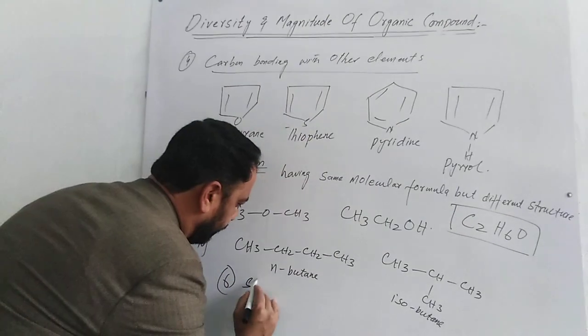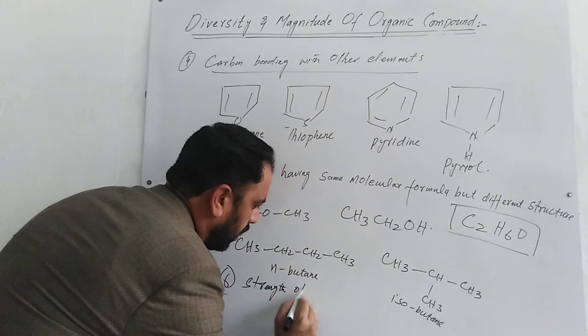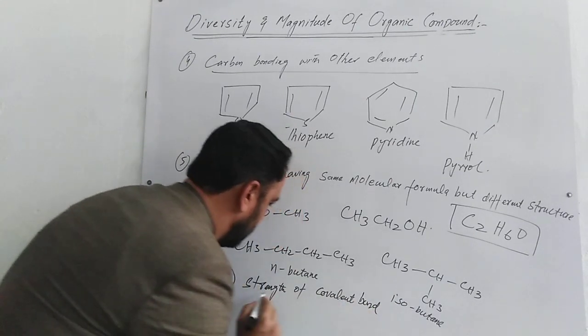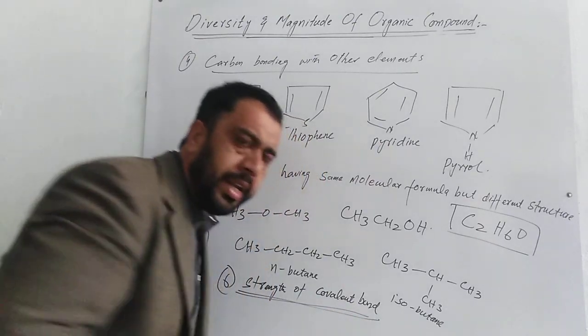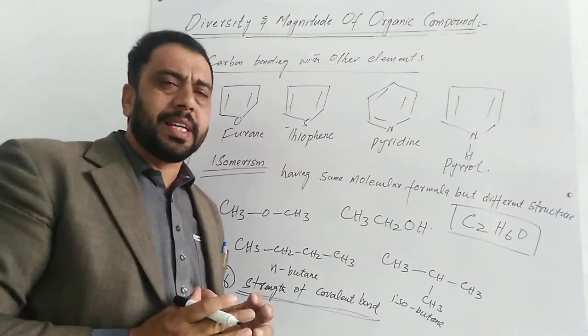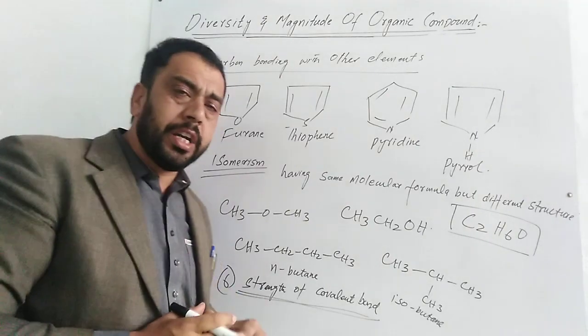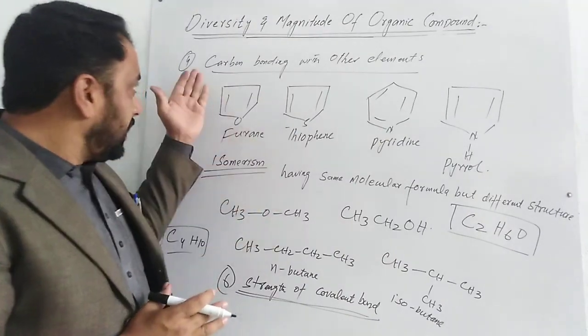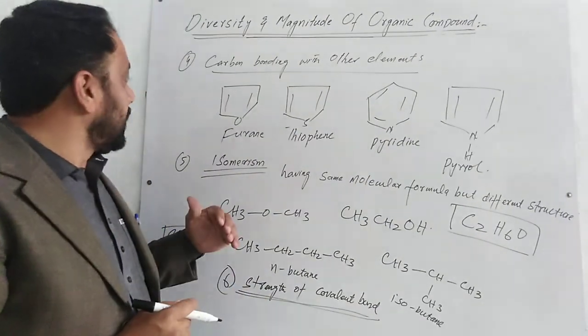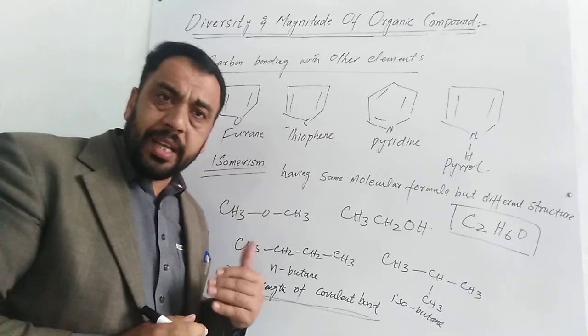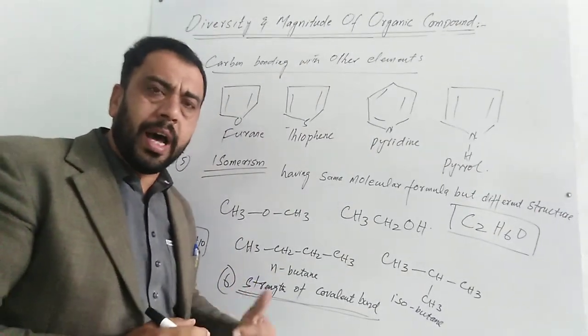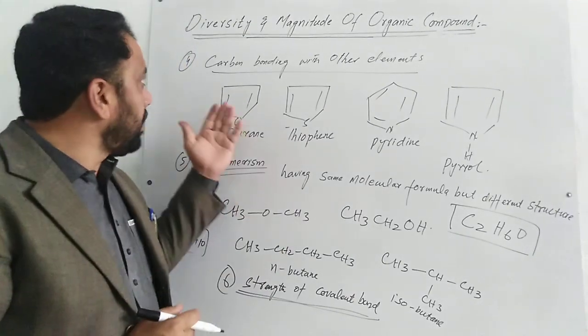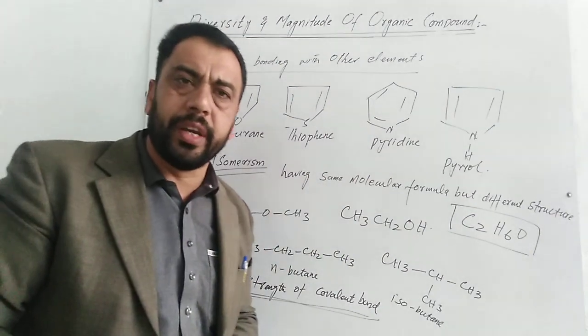Another property is the strength of covalent bonds of carbon atoms. Carbon atoms are small in size and their bond energy is very high. This is also a reason. So these are the different reasons why organic compounds exist in large variety and large numbers. This is about diversity and magnitude of organic compounds.